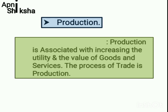Production means to make a product. We call it production. As soon as the product is made, we will sell it, then distribute it, then get people to receive it and use it. We call this entire process production.